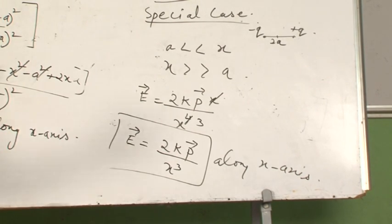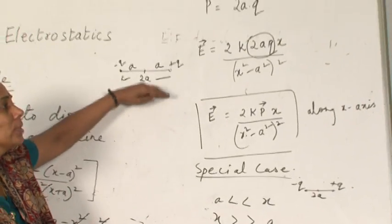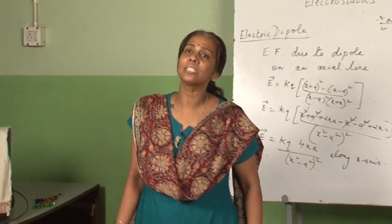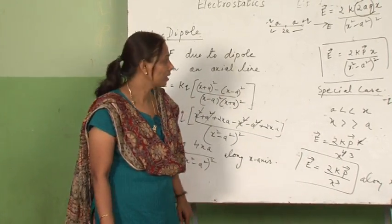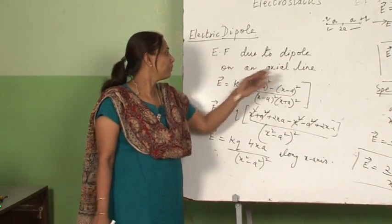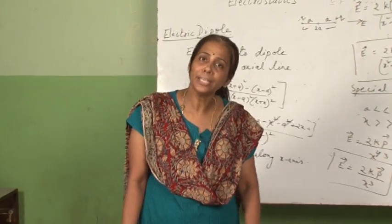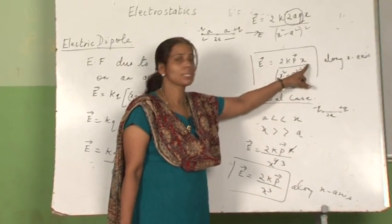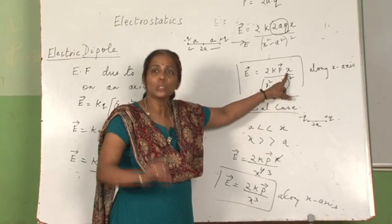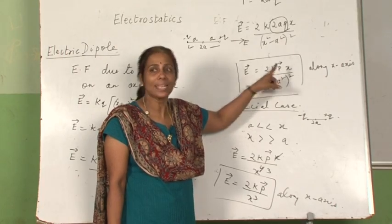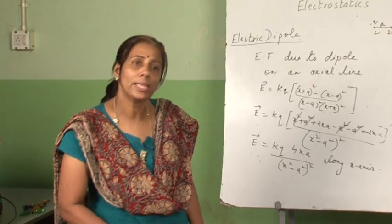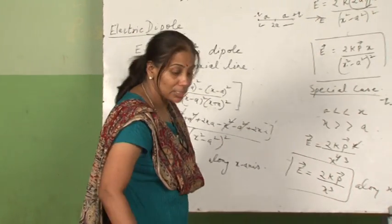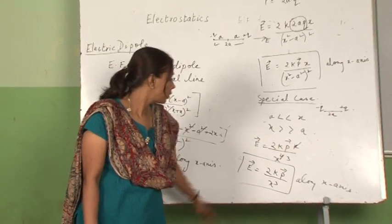Note that we have minus q on one side and plus q on the other, and the resultant electric field due to the dipole was in this direction. The direction of the electric field is always from the minus charge to the plus charge. So the electric field due to a dipole on the axial line is 2kp upon x³ along the x-axis. We can also write x as r, giving E is equal to 2kp upon r³.